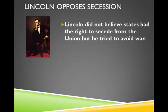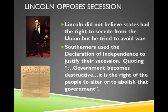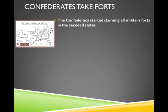Lincoln did not believe the states had the right to secede from the Union, but he did try to avoid war. Southerners used the Declaration of Independence to justify their secession, citing the section stating that when a government becomes destructive of people's natural rights, it is the right of the people to alter or abolish that government and replace it with a new one. Once their government was in place, the Confederacy started to claim all military forts in the seceded states, and Jefferson Davis sent word to take those forts and chase out as many Northerners from the South as they could.